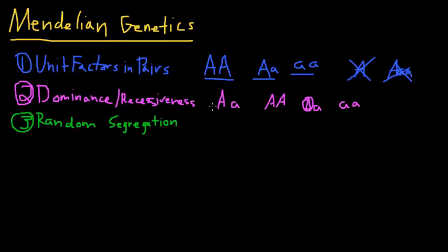Just like unit factors in pairs, there are exceptions to this that you'll learn in class, which is incomplete dominance and lots of other stuff. But in general, just know that one dominant, one recessive, or you could have a pair.